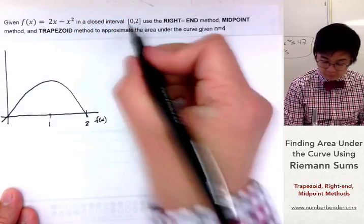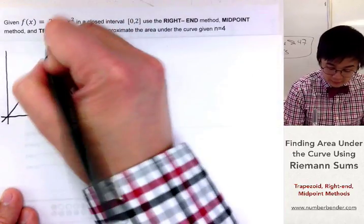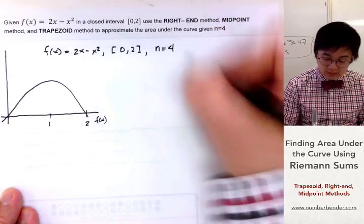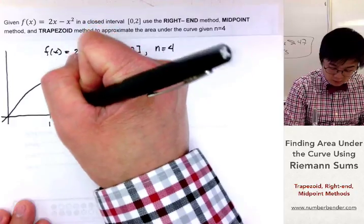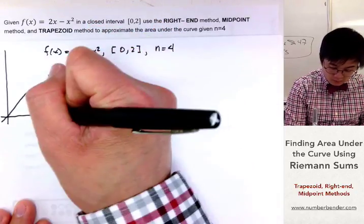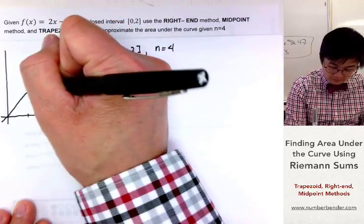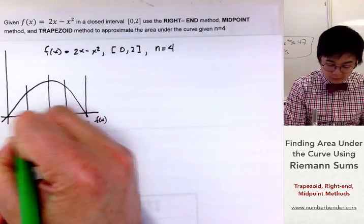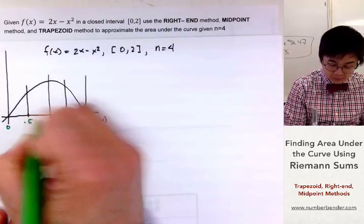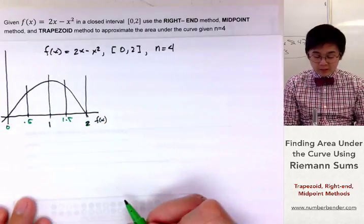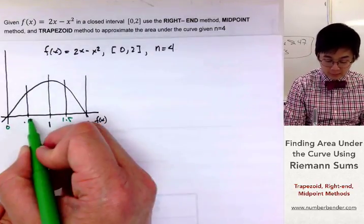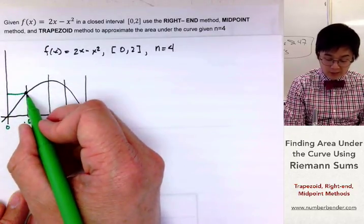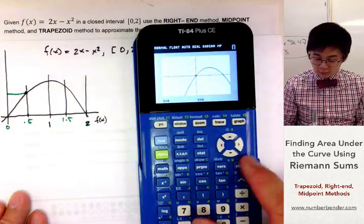We need to produce 4 rectangles. So f(x) is 2x minus x² between 0 and 2 with 4 rectangles. This is now our 4 rectangles with the same interval. We know that our intervals will be from 0, 0.5, 1, 1.5, and then 2.